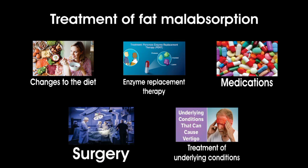The treatment of fat malabsorption depends on the underlying cause and severity of the condition. Some possible treatments include changes to the diet: a low-fat diet may be recommended to reduce the amount of fat that needs to be digested and absorbed. In addition, supplements of fat-soluble vitamins, such as vitamin A, D, E, and K, may be prescribed to help correct deficiencies. Enzyme replacement therapy: if the cause of fat malabsorption is related to pancreatic insufficiency, enzyme replacement therapy may be prescribed. This involves taking pancreatic enzyme supplements with meals to help with digestion and absorption of fats.